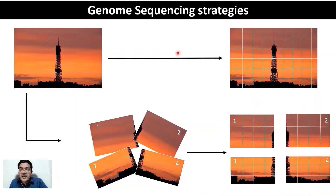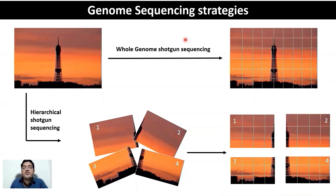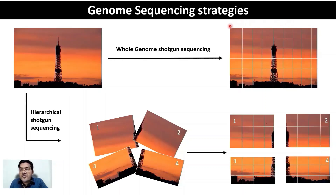The first strategy is known as the whole genome shotgun strategy, which can be used to sequence smaller genomes — usually prokaryotic genomes — because the size is small and the repeat content is less. With less repeat content, there is very little confusion about where each piece belongs. So for smaller prokaryotic genomes with low repeat content, the whole genome shotgun sequencing strategy can be used directly.